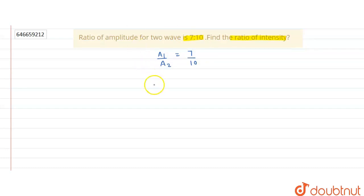We know that intensity is directly proportional to the square of amplitude. Therefore, we can write the ratio of intensity, that is I1 by I2, as A1 by A2 whole square. Let's say this is equation 1.